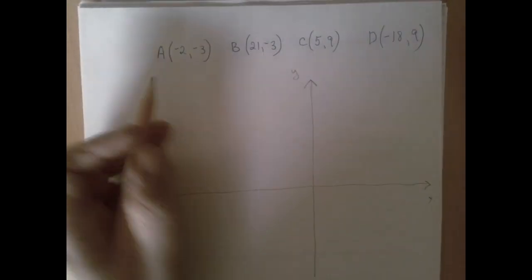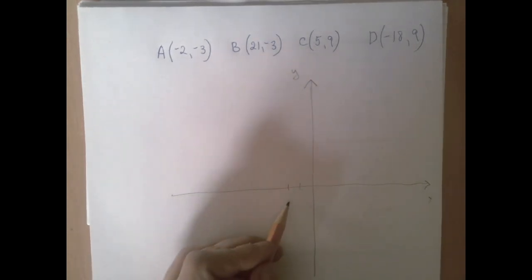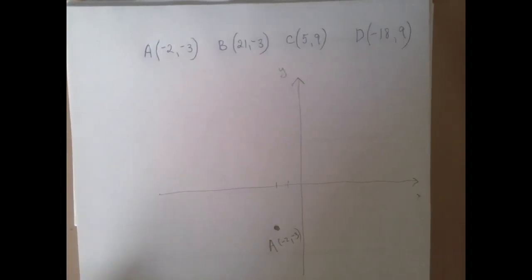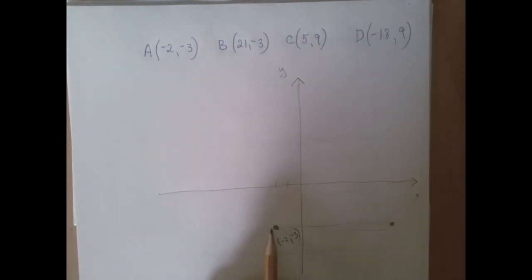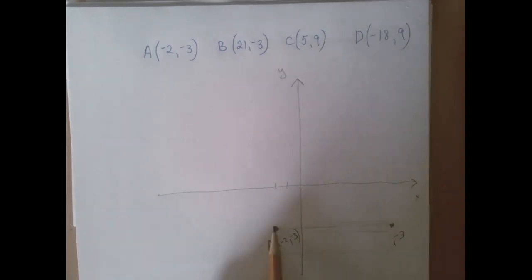So that said, A is negative 2, negative 3, B is 21, negative 3. So notice that AB is going to be horizontal, because they both have the y-coordinate negative 3, right? So the y-coordinate does not change up or down, and the x-coordinate is 21. So that will make it easy for us to read this side's length.